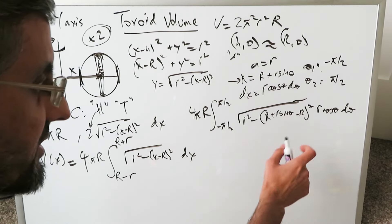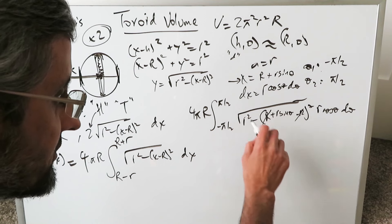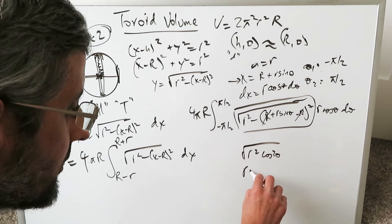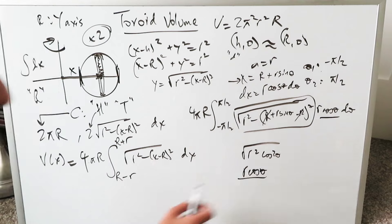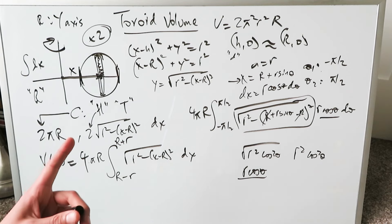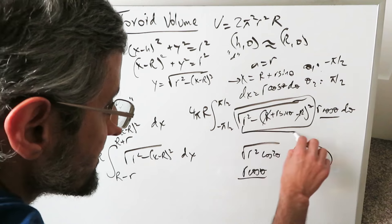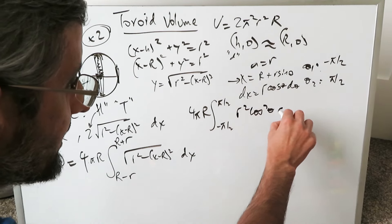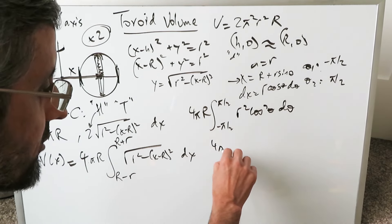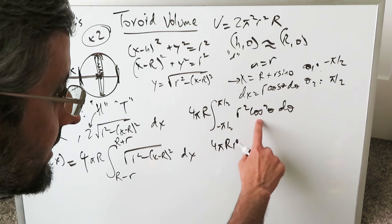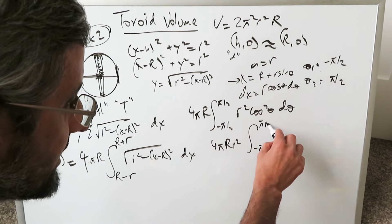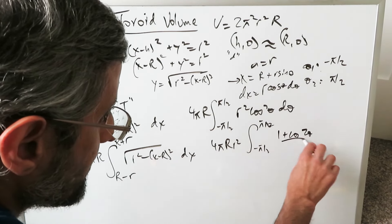Working through the substitution: the radical simplifies to r·cosθ, which multiplies with dx = r·cosθ dθ to give r²cos²θ dθ. The full integral becomes 4πR times the integral from −π/2 to π/2 of r²cos²θ dθ. Pulling r² outside, we have 4πRr² times the integral of cos²θ dθ. This is a form you've seen many times when doing integrals involving unit circles.